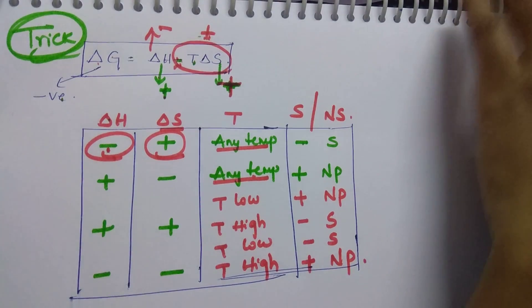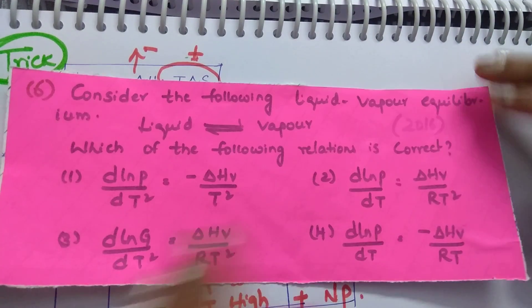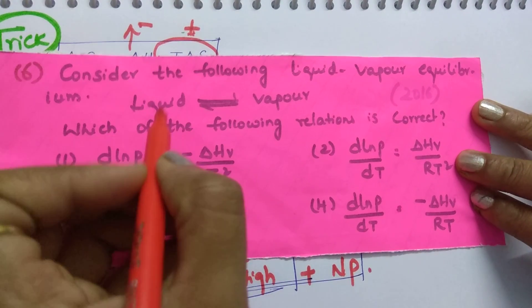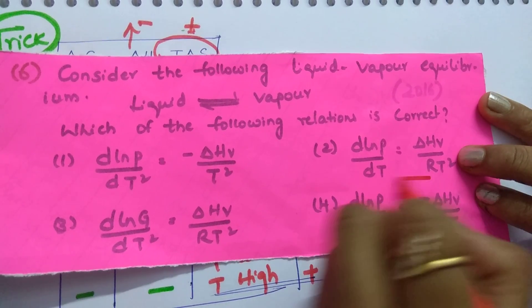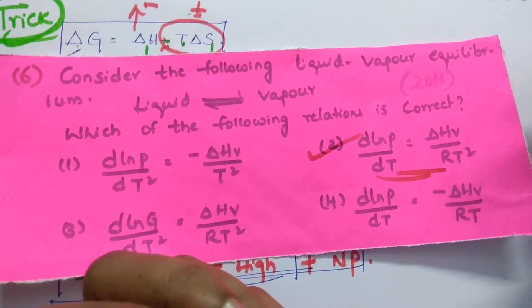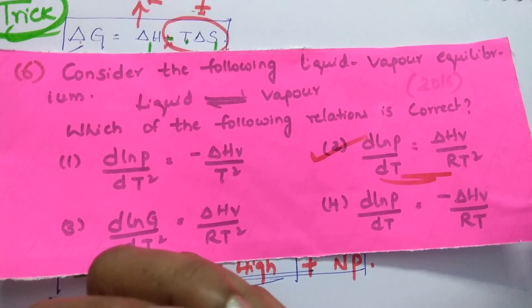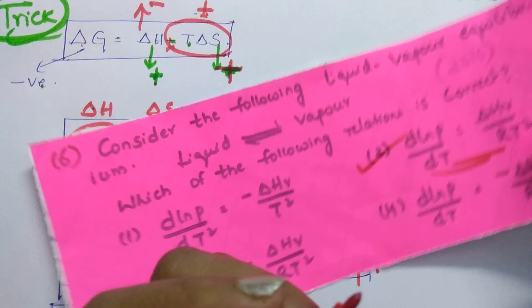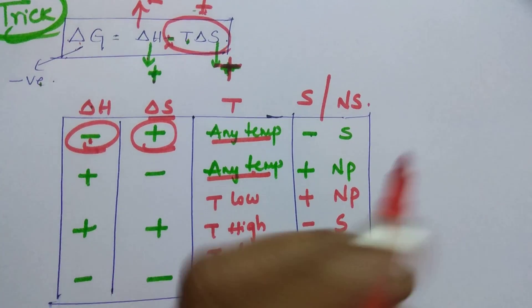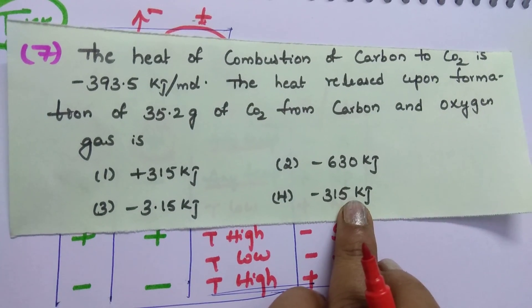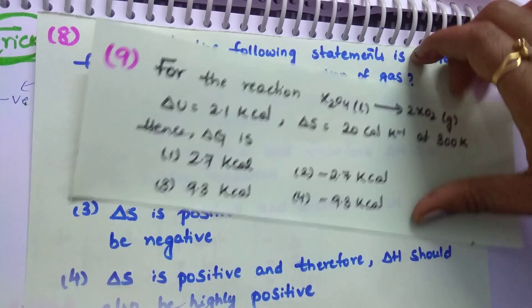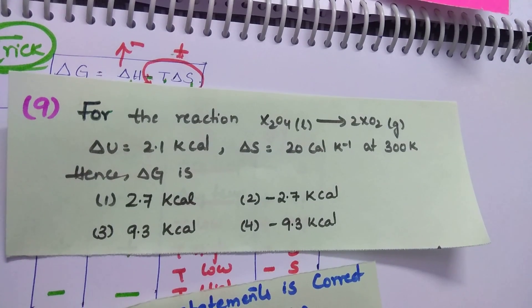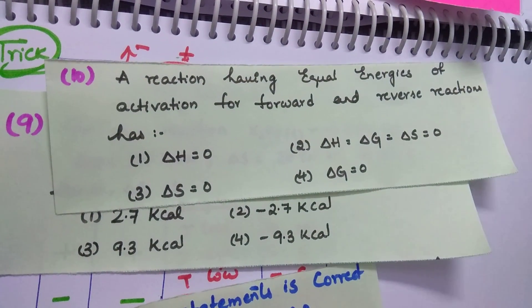Question 6 is the Clausius-Clapeyron equation — this is a direct formula question. For the liquid-vapor equilibrium, if you don't know the formula in the exam, it is better to leave it rather than guess using hit-and-trial and lose marks. Questions 7 through 11 are given as practice. I hope you like this video, thanks for watching.